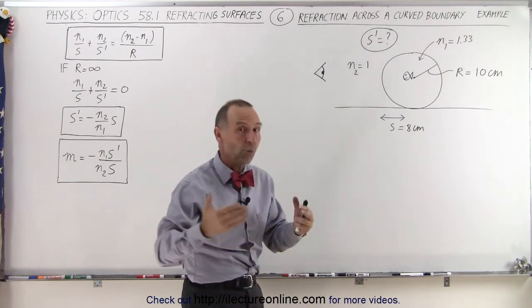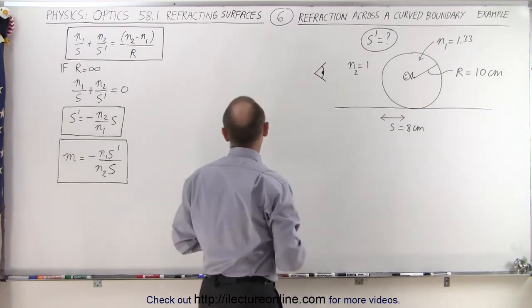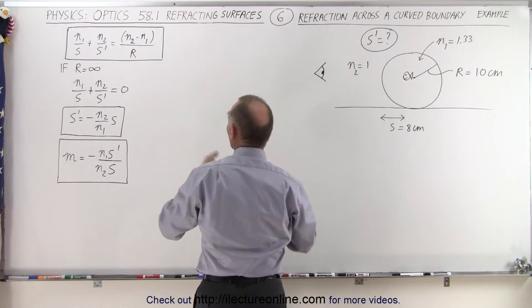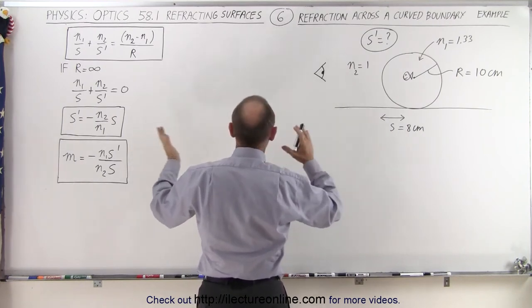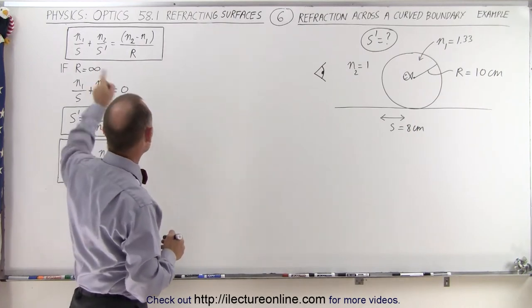So now the image will appear where? That's the question. We're trying to find S prime. We're going to utilize this equation right here, which tells us that the relationship between N1, N2, S, S prime, and R can be found using that equation. So let's plug everything in that we know.